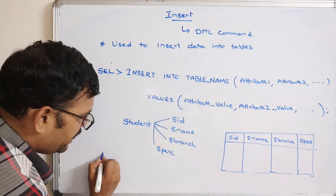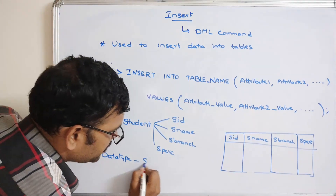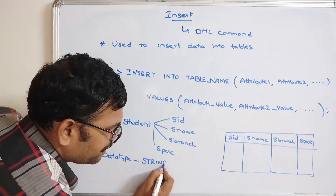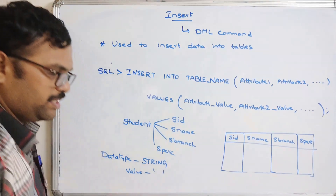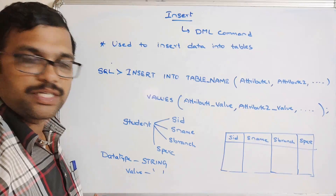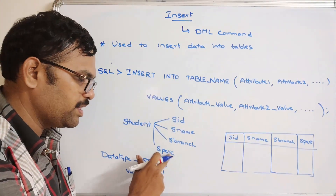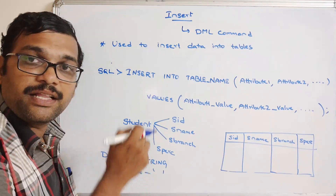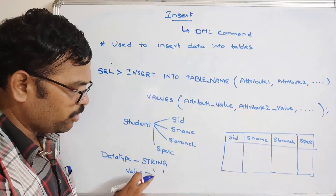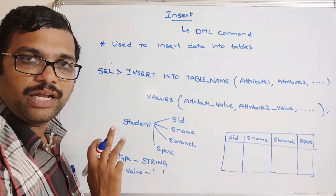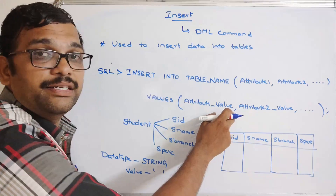One important thing to remember: if the data type is a string — that is, character, varchar, or text — the value must be enclosed in single quotations. So wherever we provide a string value, we must use single quotes.